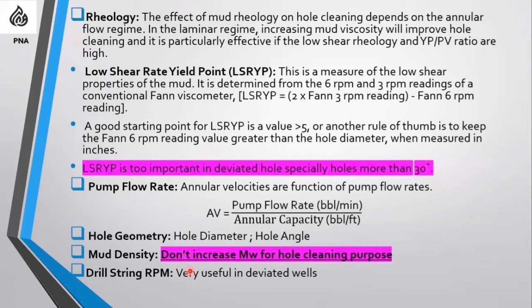For large holes such as 23 or 24-inch sections, you bump high-vis sweeps frequently for cleaning. Mud density is also a factor for hole cleaning, but you cannot increase mud weight just for cleaning without approval. However, some clients set high-vis sweeps slightly higher in mud weight — maybe 0.1 ppg more — to help with cleaning.